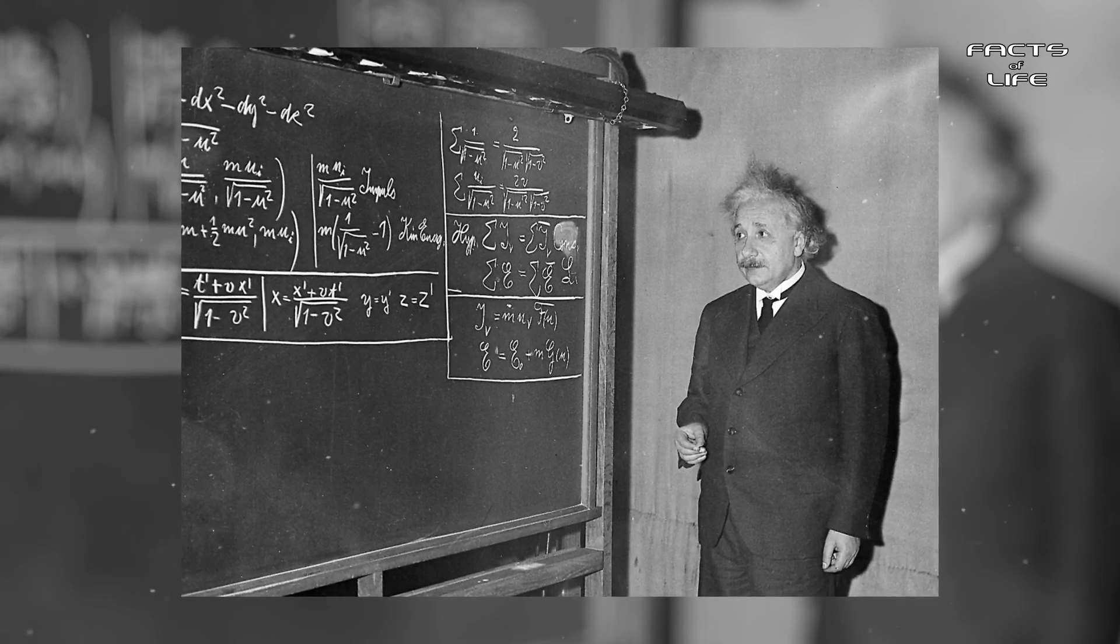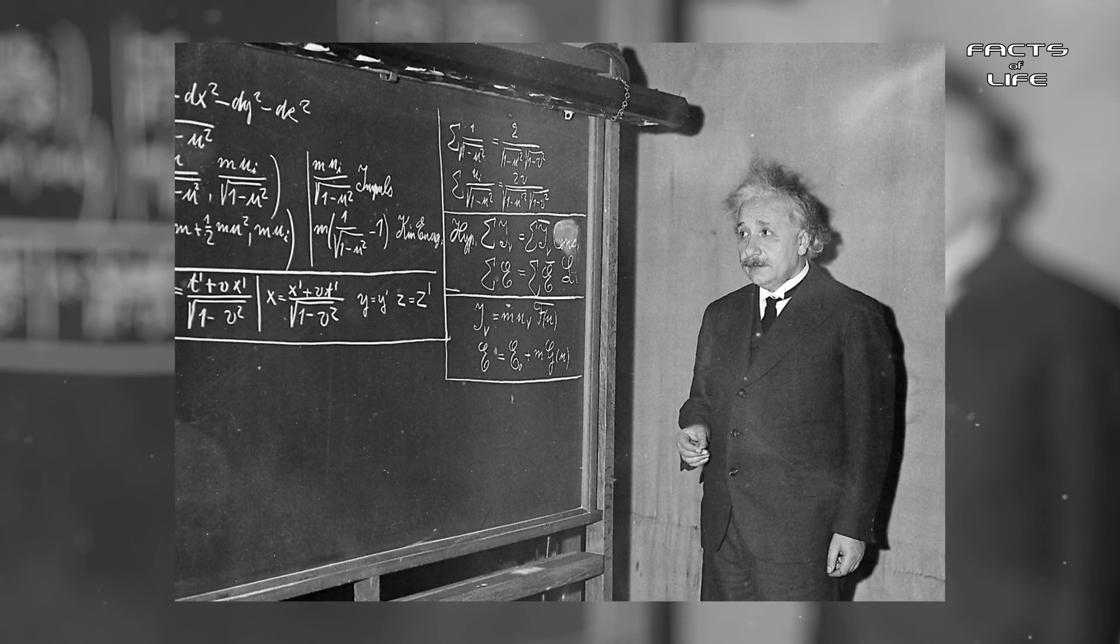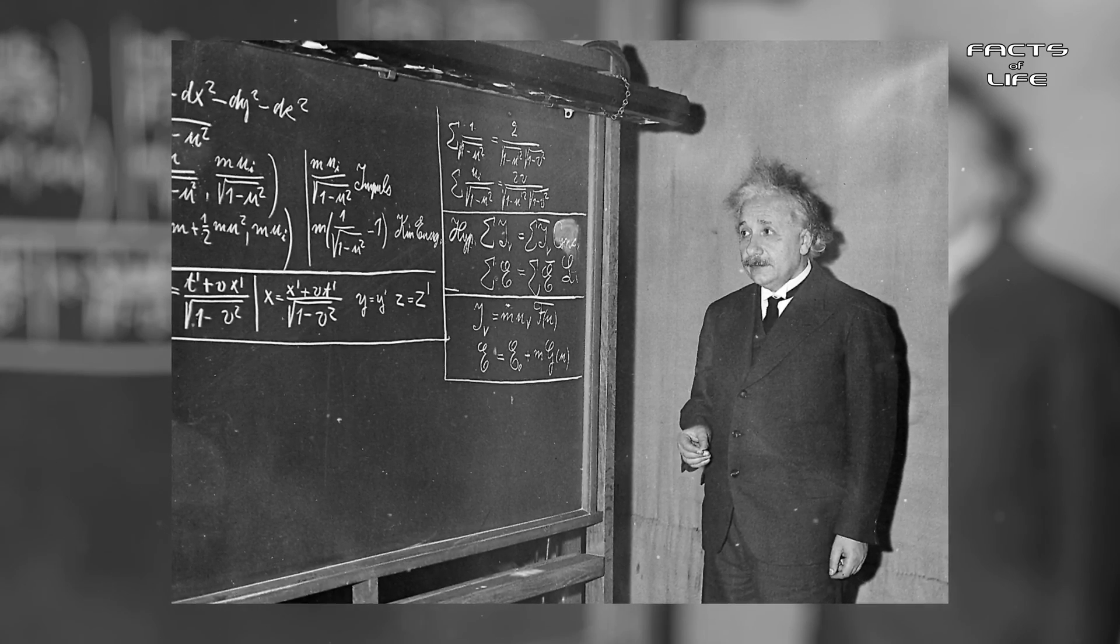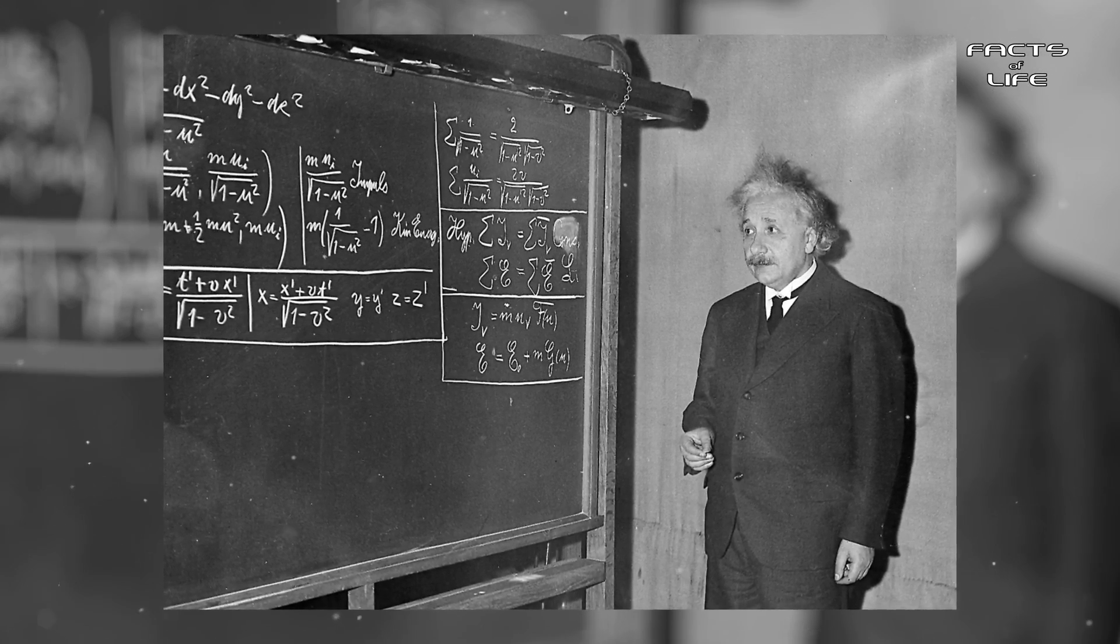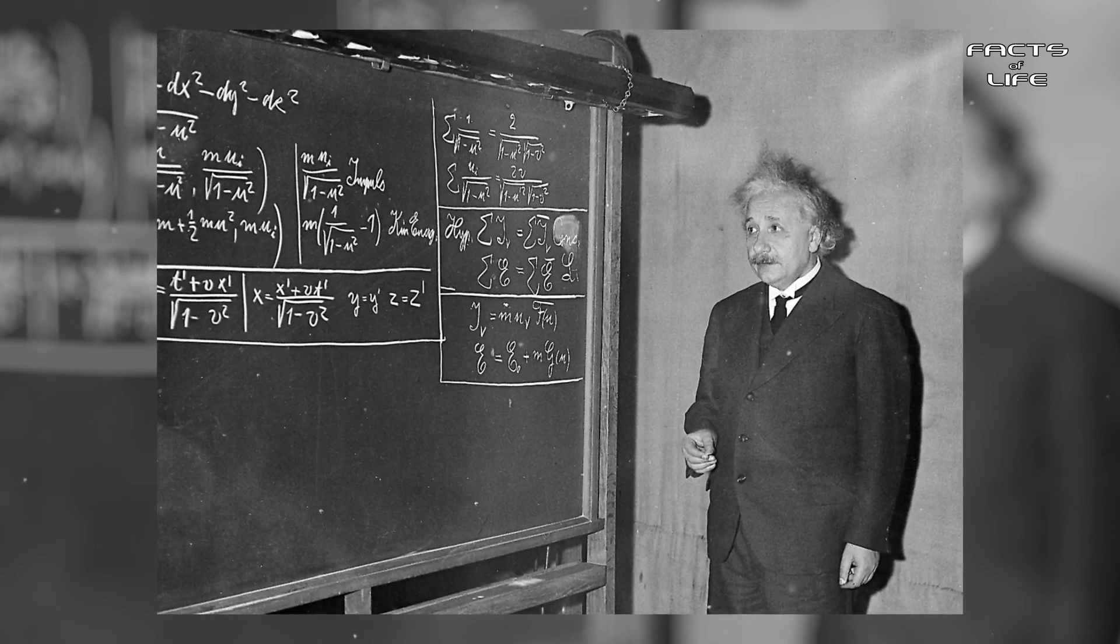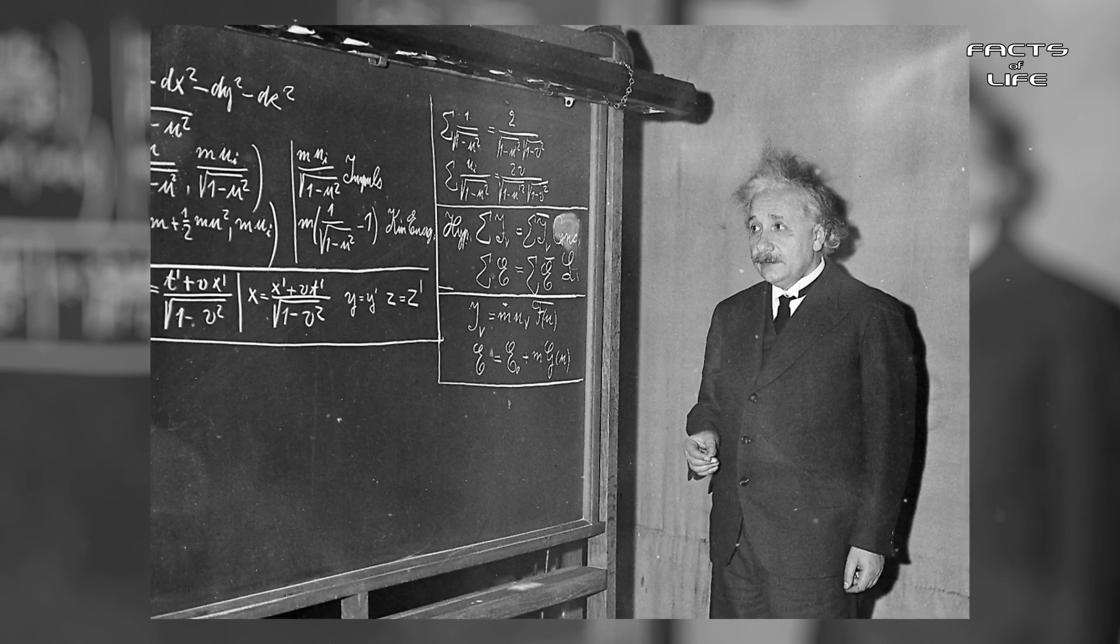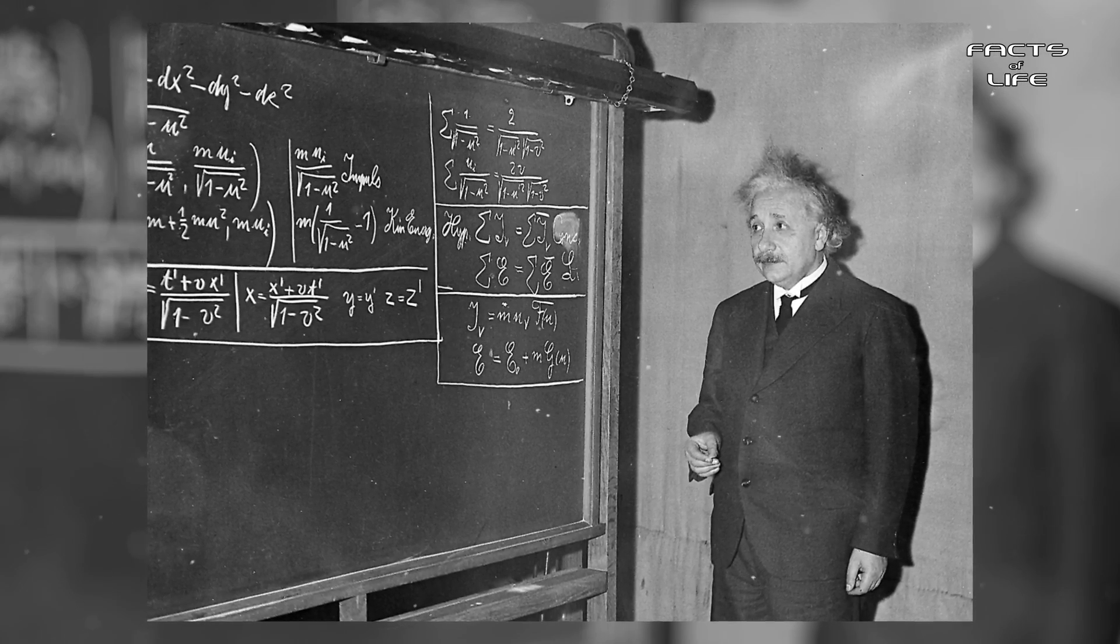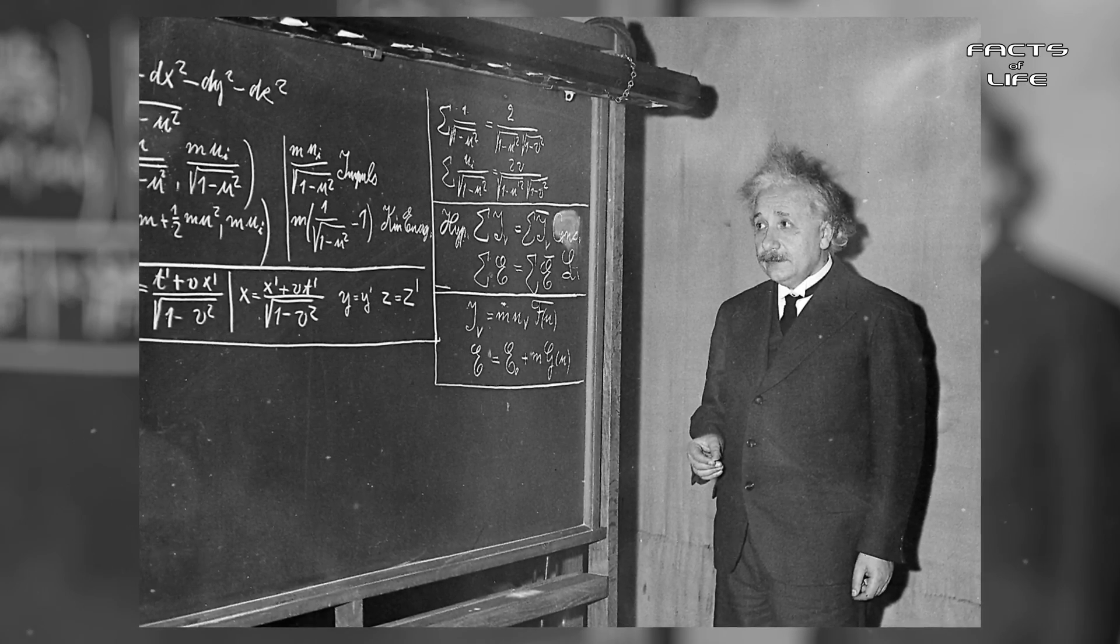Perhaps the most famous of such equations are the Einstein field equations, also known simply as Einstein's equations, a set of 10 equations in Einstein's general theory of relativity that describe the fundamental interaction of gravitation as a result of space-time being curved by mass and energy. The amount of gravity present in a system is proportional to the amount of energy and momentum, with the constant of proportionality related to G, a numerical constant.